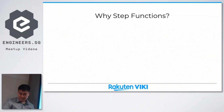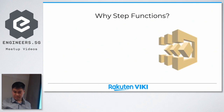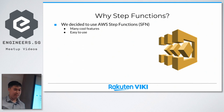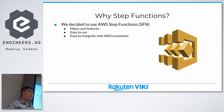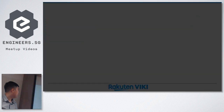So why Step Functions? We were considering a lot of tools for workflow orchestration — Apache Airflow, AWS Simple Workflow, and others. We chose Step Functions because it had many cool features, and it was a young service at the time — only one year old at end of 2017. It's easy to use and easy to integrate with other parts of the AWS ecosystem, which we were already using — AWS S3 and other components. It also has nice visual workflows, which I'll show you.